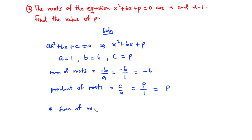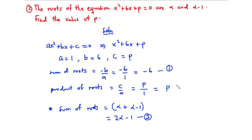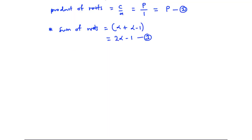Since the roots are alpha and alpha minus 1, let's generate expressions for the sum and product of roots. The sum of roots is alpha plus alpha minus 1, which equals 2 alpha minus 1 — call this equation three. The product of roots is alpha times alpha minus 1 — call this equation four.